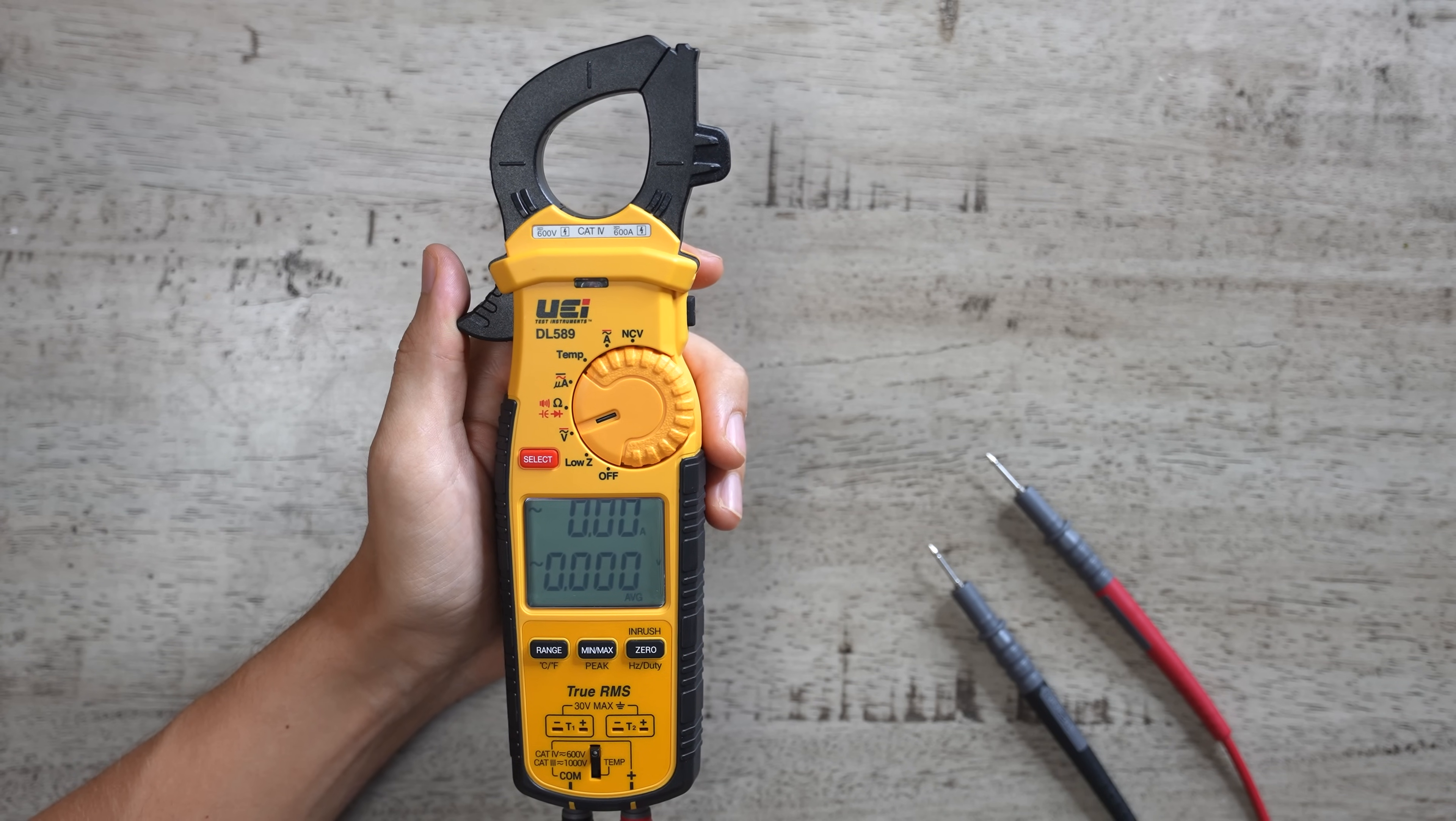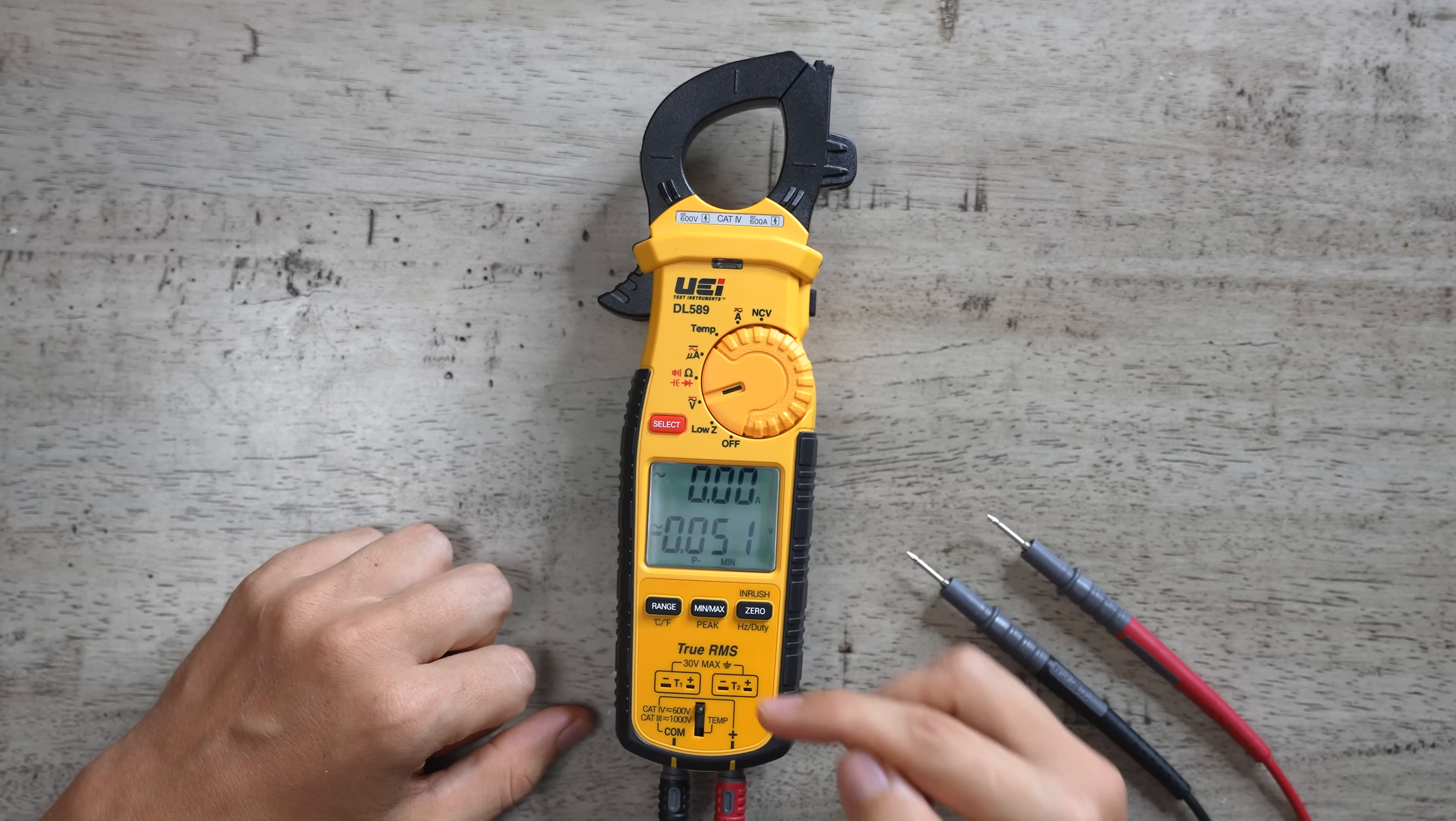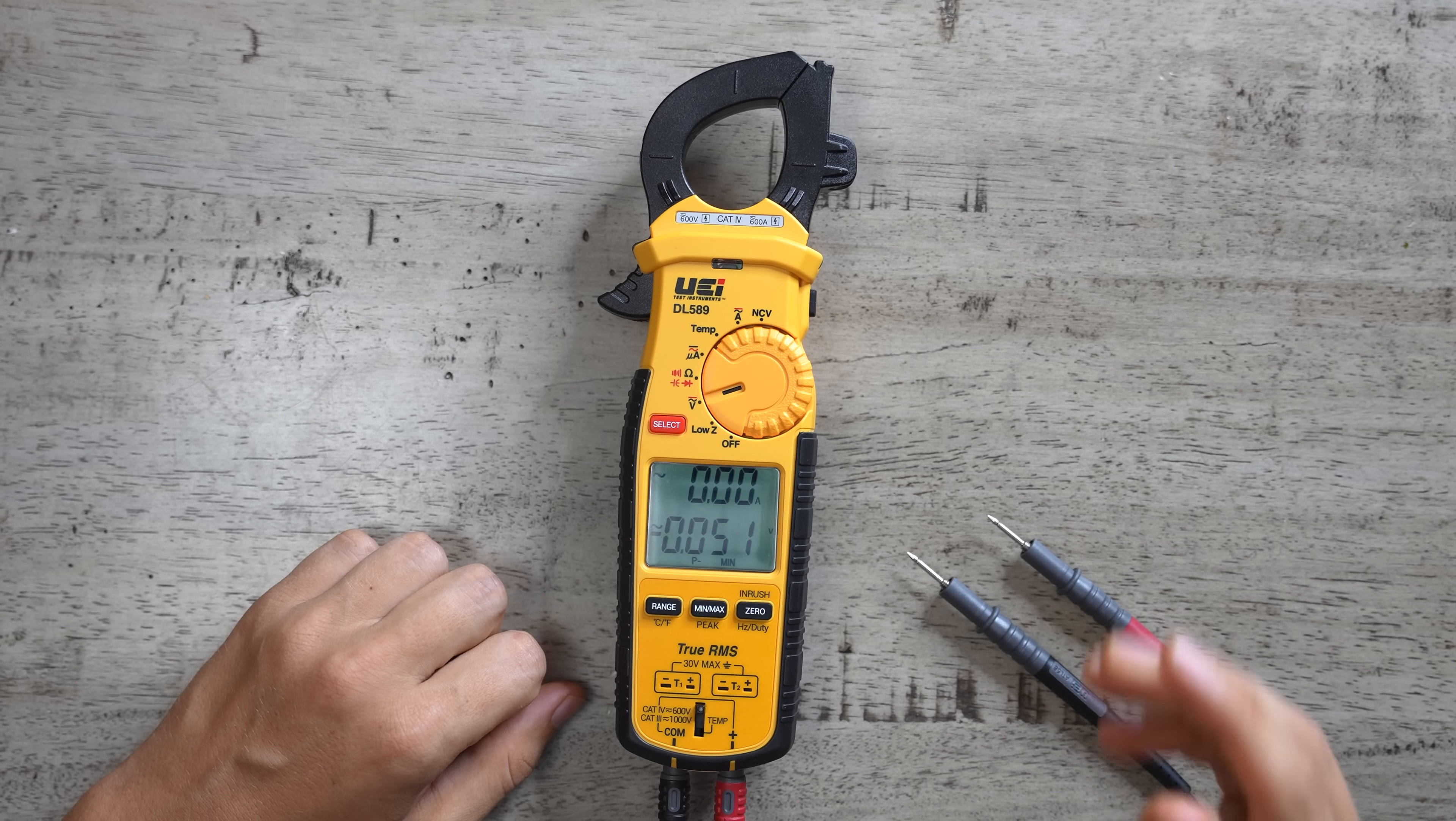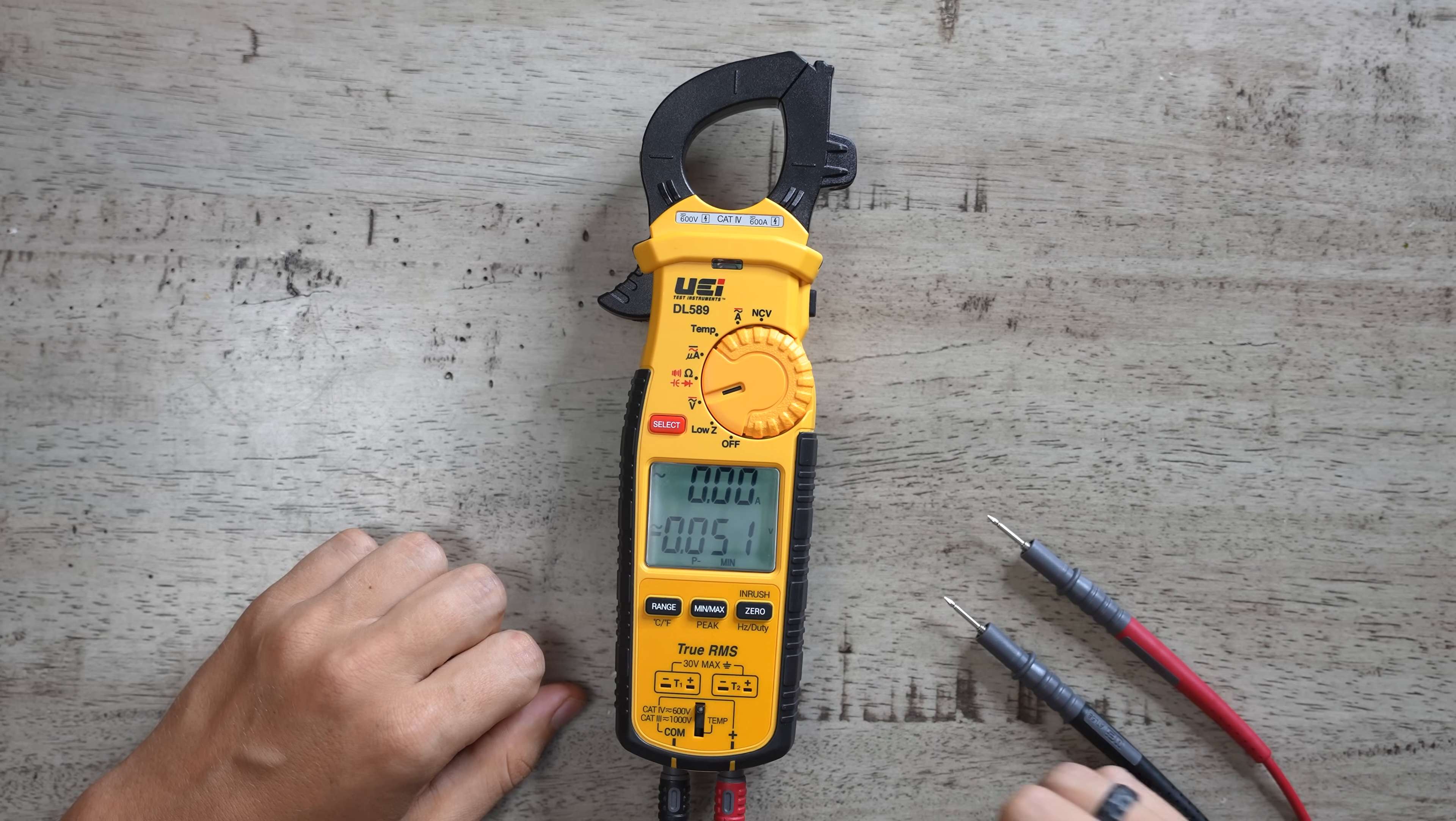And then if I press and hold this button, we have peak max and peak minimum. When you select peak, it's the same thing as the regular minimum and maximum, except it's almost three times as sensitive, so it reacts a lot faster. For example, if you're measuring voltage and it spikes just for a fraction of a second, if you have it set to peak max, it'll still be able to catch that.